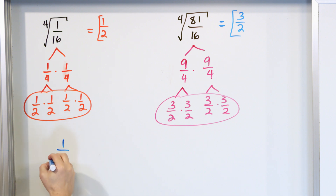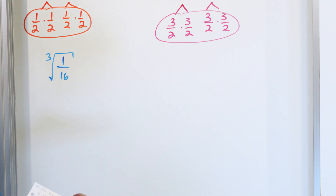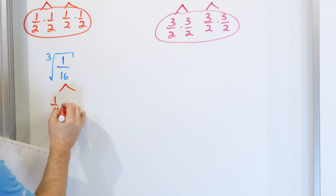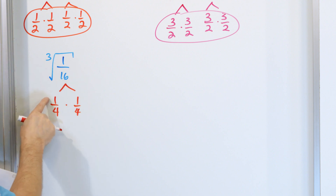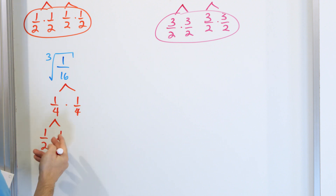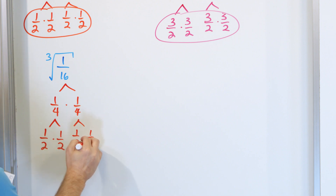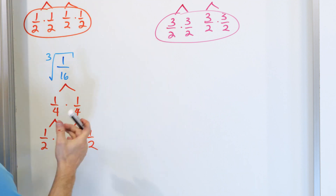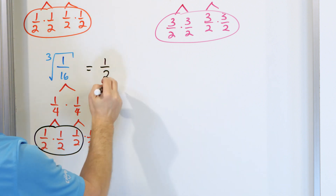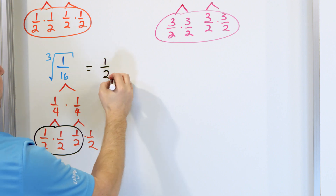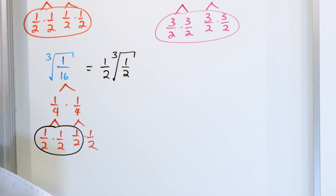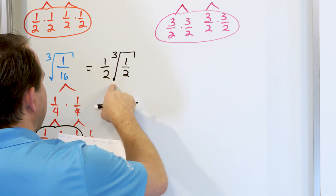But what if you have 1/16 and you're going to take the cube root of that? We'll do a factor tree. We know 1/4 times 1/4 gives us 1/16. But we need three of them for a cube root. So we break 1/4 into 1/2 times 1/2, and then we break that further to 1/2 and 1/2. Now we finally have a triplet — three of these can be grouped together. That triplet comes out once, giving us 1/2, but there's one left over. He's an orphan, just like in the square root case, and he stays underneath the cube root. So the answer is 1/2 times the cube root of 1/2.